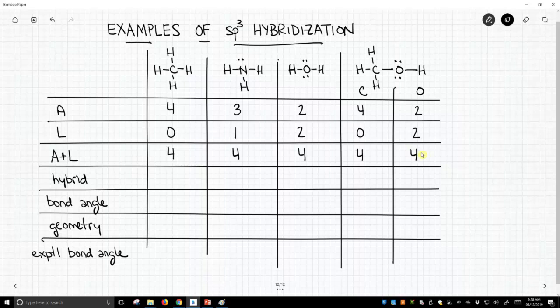And because A plus L equals four, typically that is our value that determines our hybridization. A plus L equals four. We want four hybrids. These are all going to be sp3 hybridized. So sp3 five times across.